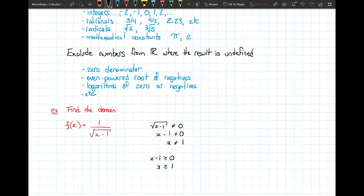Now, you put these two restrictions together. X cannot equal 1, and x has to be greater than or equal to 1. If you combine these two things together, it tells you that x has to be strictly greater than 1. And that would be one way of expressing the domain of f of x.